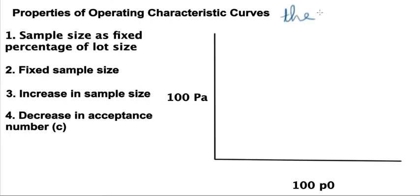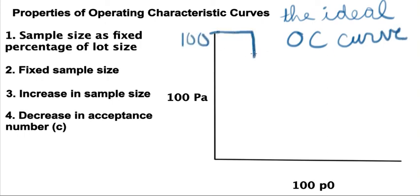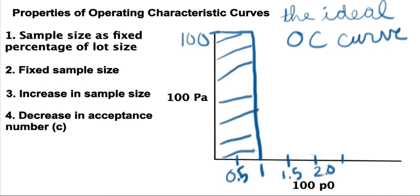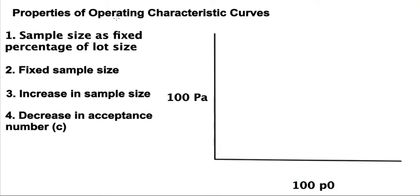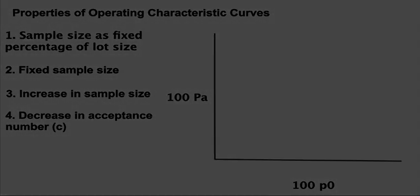This brings us to the ideal OC curve, as shown in this picture. The ideal OC curve can only be achieved with 100% inspection. In other words, the sample size is the same as the lot size. What's nice about this is we have a very large shoulder. There's no curve, meaning there's only 100% probability of acceptance, or there's zero percent probability of acceptance for a given percent nonconforming value. And those are the four properties of OC curves to be aware of as you construct your own acceptance sampling plan.